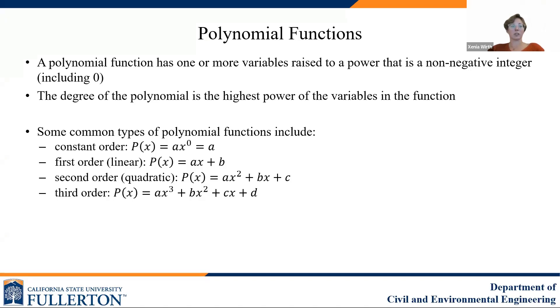Some common types of polynomial functions are seen here. They include a constant order, y equals a, which is a constant. This is also x to the power of zero. A first order linear polynomial, y equals ax plus b. Second order, which we call quadratic, where the highest power is x squared. And third order, where the highest power is x cubed. They also extend past this: fourth order, fifth order, et cetera. These are some common types that we see frequently.